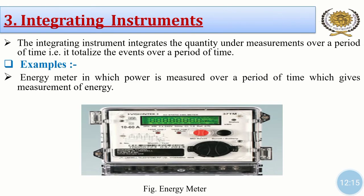The third type is integrating instruments. Integrating instruments integrate the quantity under measurement over a period of time — that is, they totalize the events over a period of time. For example, an energy meter, in which power is measured over a period of time, giving the measurement of energy. The figure shows an energy meter, which is also available in our homes, and it totalizes the total electricity or total power over a period of time.